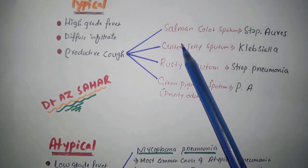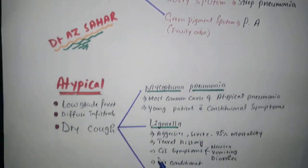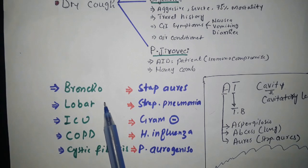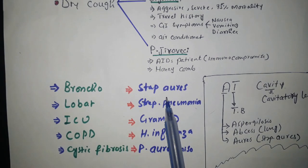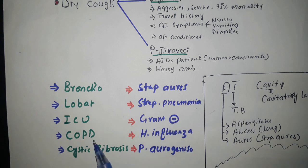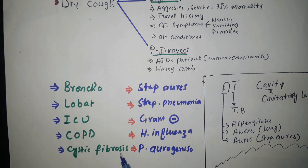To summarize typical and atypical pneumonia: in bronchogenic pneumonia the cause is Staphylococcus, in lobar pneumonia the cause is Strep pneumoniae, in ICU patients the cause is gram-negative organisms. In COPD patients the cause is Haemophilus influenzae, in cystic fibrosis the cause is Pseudomonas aeruginosa, and in travellers the cause is Legionella.